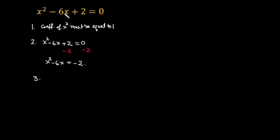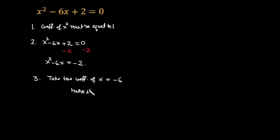Step number three: take the coefficient of x, which is minus 6, and halve it, which gives minus 3. Then square it, which gives 9.